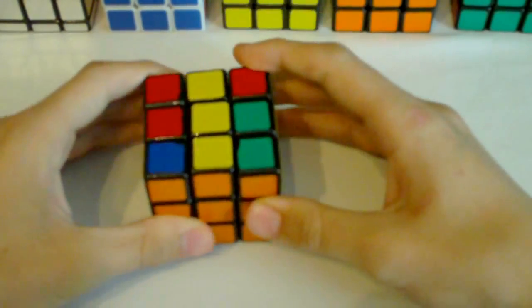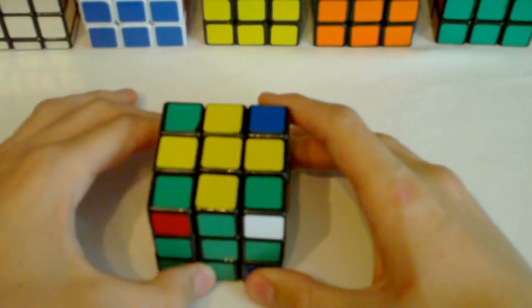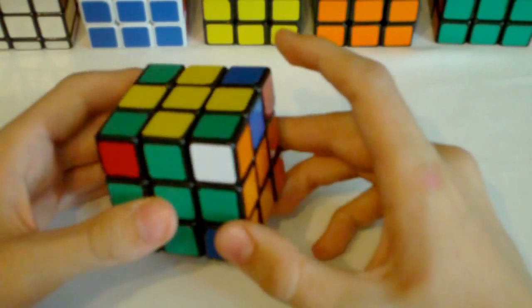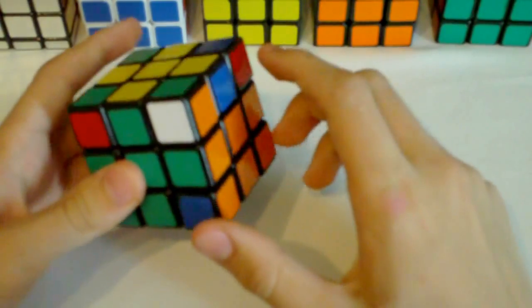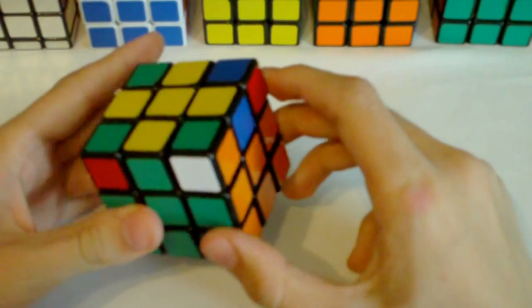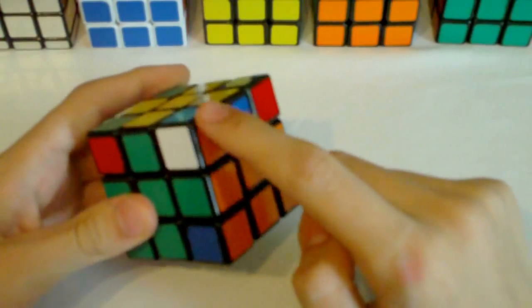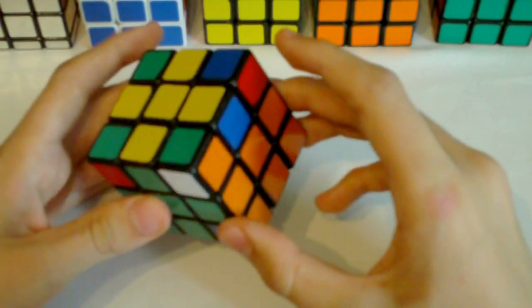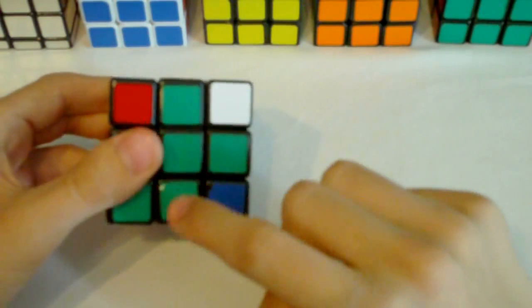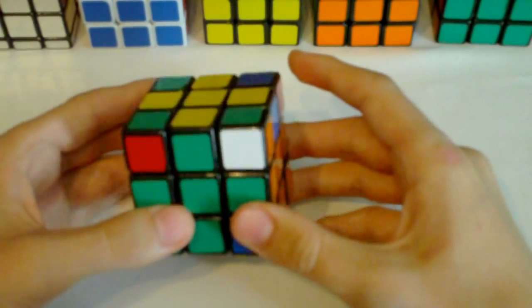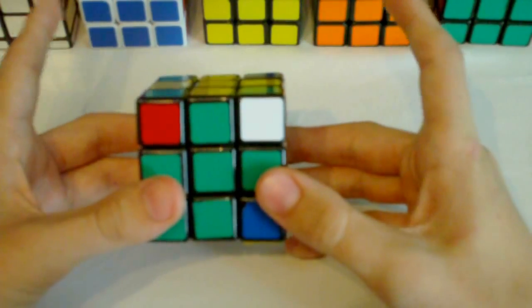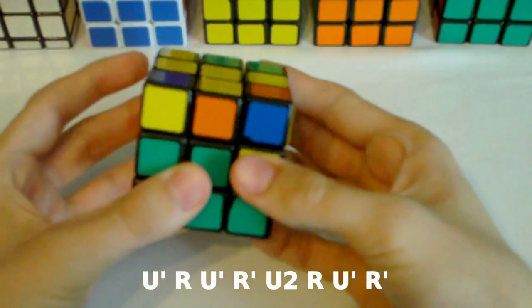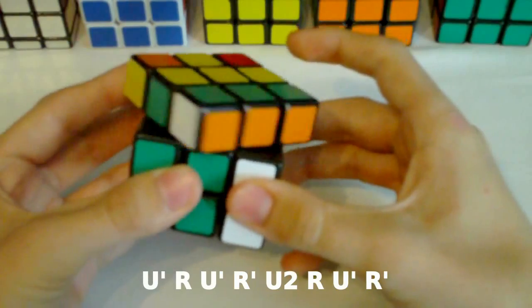So you probably know this already, but for any F2L beginners out there watching right now, this is a really good algorithm. In this case you have the edge solved and the corner is right here above the edge and as you can see these two colors on the right side match up and the white sticker is in the top right of the front face. So this is the algorithm you use to solve this case: U' R U' R' U2 R U' R'.